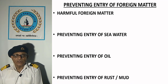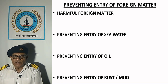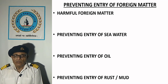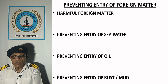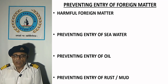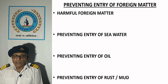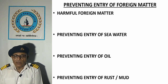Preventing entry of rust or mud: feed water tanks should be inspected annually to check the condition of tank coating and any accumulation of mud is removed. Feed water is chemically treated to prevent corrosion of feed pipes. The cascade tank is equipped with a towel filter which can trap any foreign particle and also absorb emulsion of lubricating oil coming back from reciprocating steam engines.